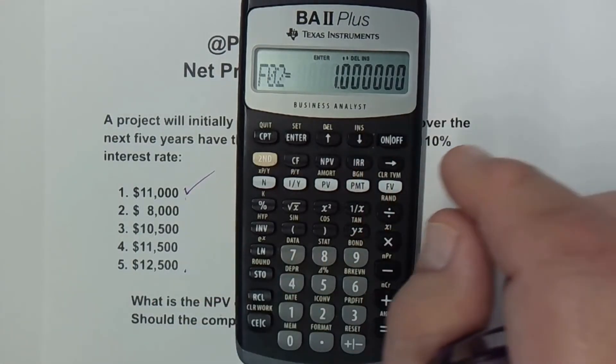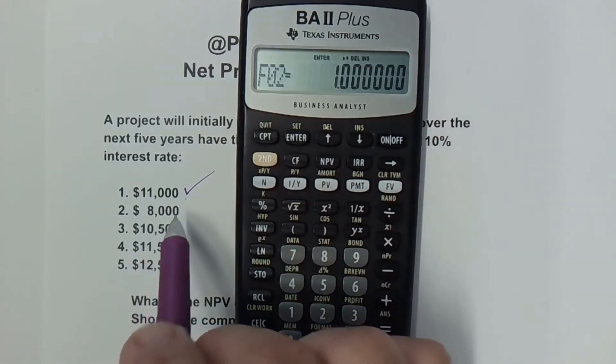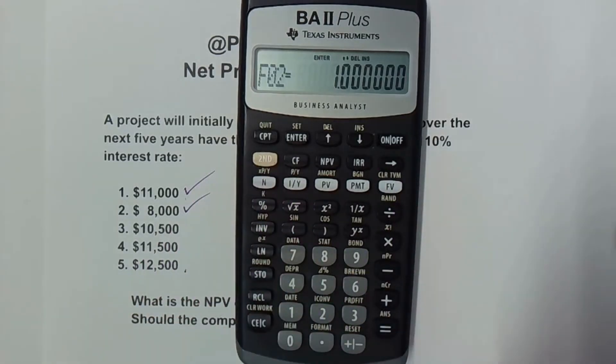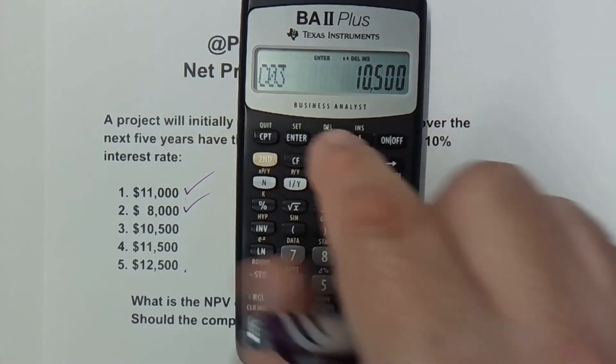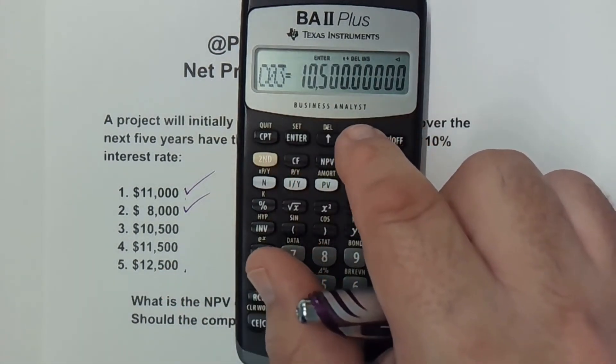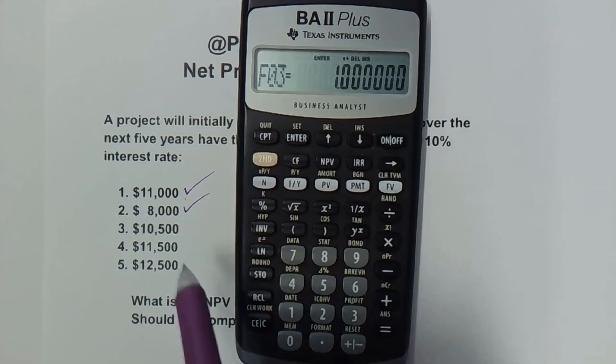I moved down. And of course it asked me the frequency for cash flow 2, which is still one time. I check it off and we arrow down for cash flow 3. Cash flow 3 is $10,500. Hit the enter button and arrow down. It only happens once.